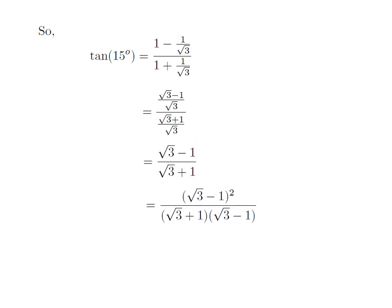As multiplying the numerator and denominator by the same number or expression does not change the fraction, let us multiply the numerator and denominator by square root of 3 minus 1.